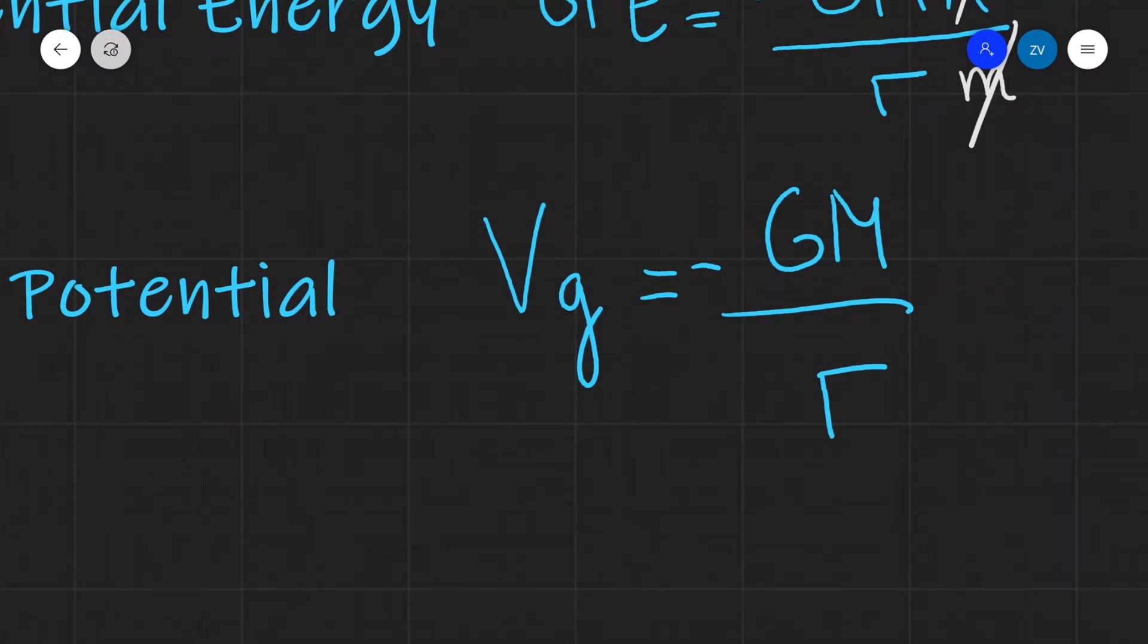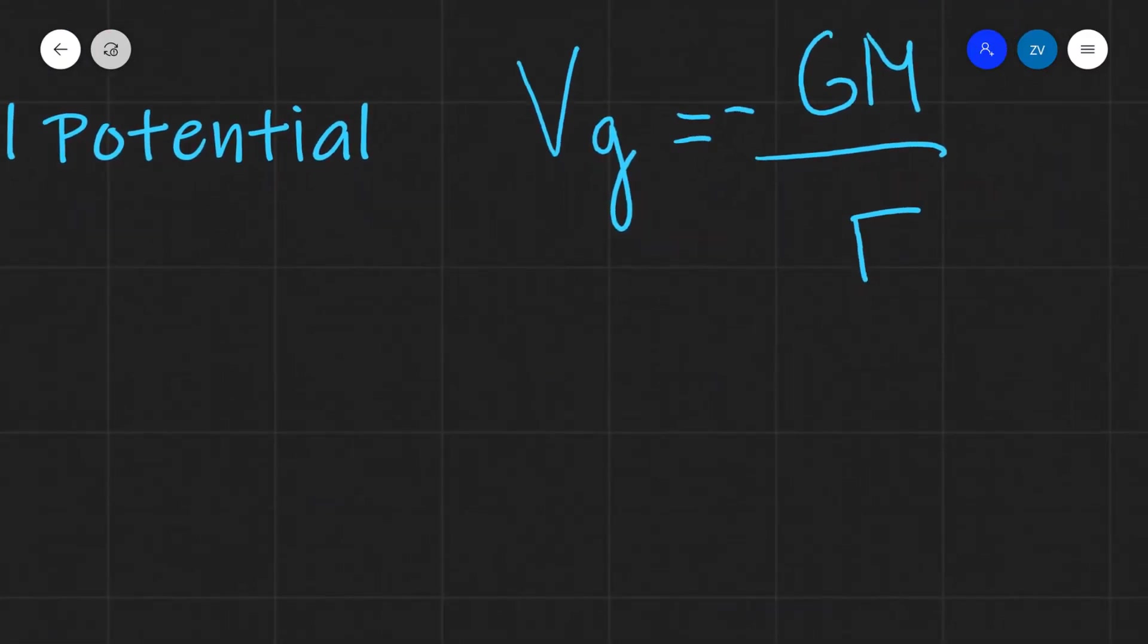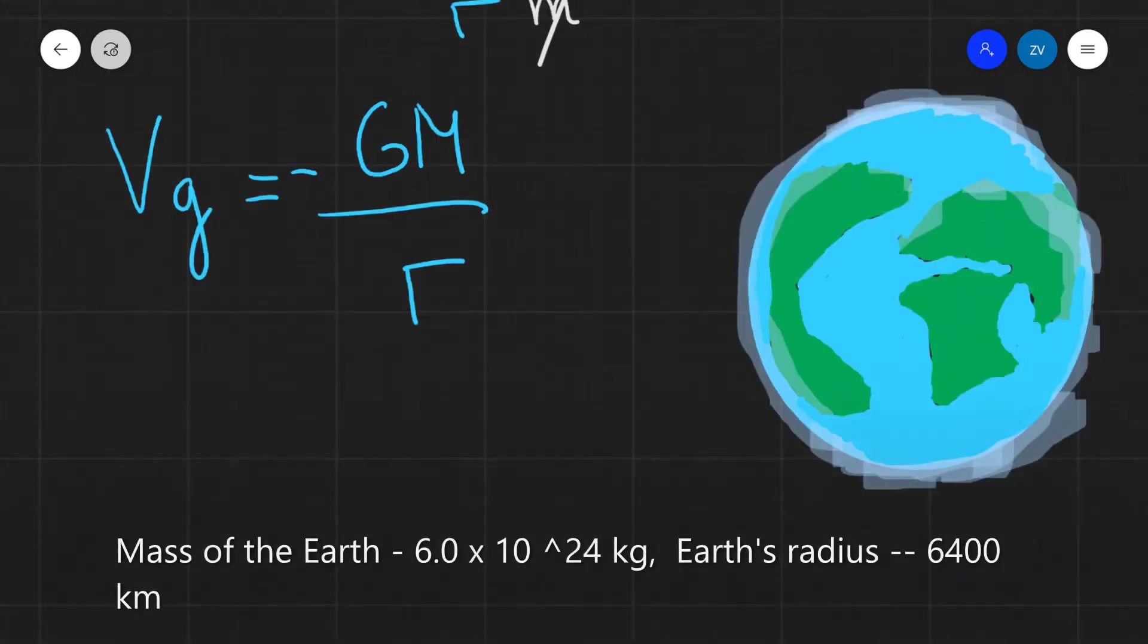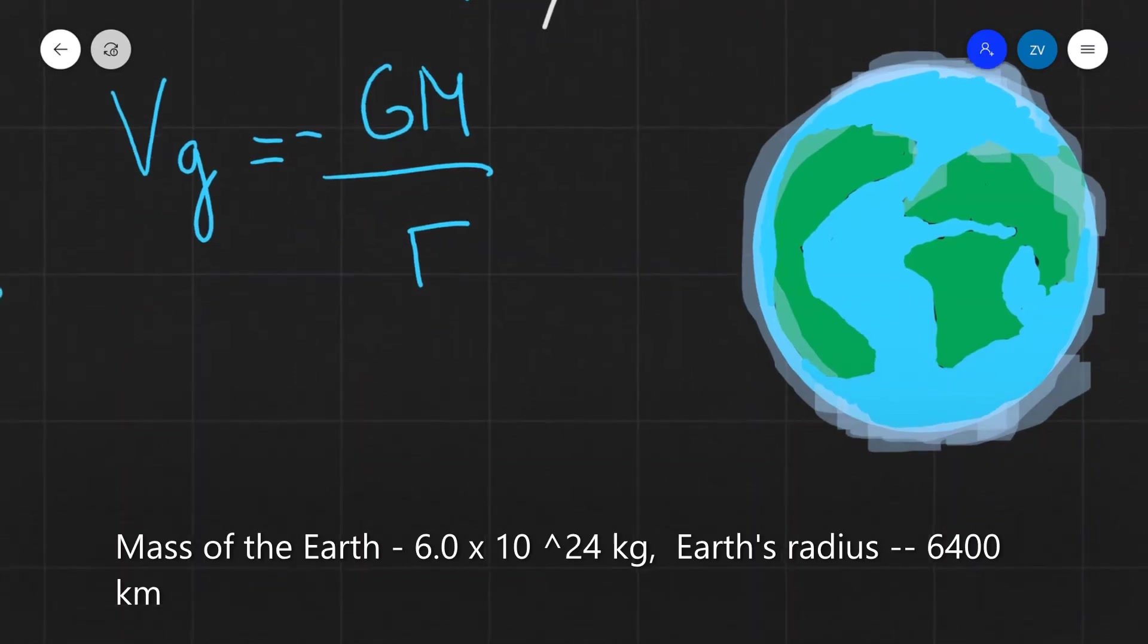Let's put this equation into practice. What I'm going to do is I'm going to calculate the gravitational potential on the surface of the Earth. Here is our surface of the Earth. Let's calculate the gravitational potential on that surface.